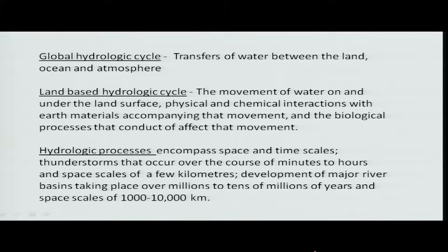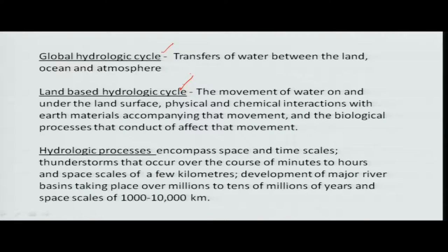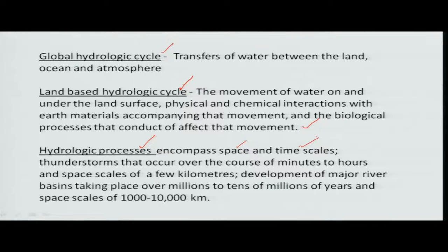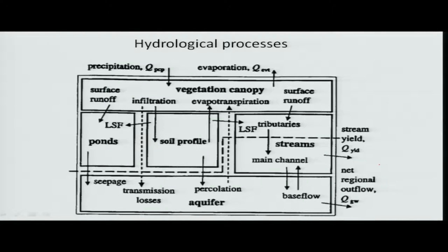If you look at the different problems in this, it is considered as a global hydrological cycle — water is transferred between land, ocean, and the atmosphere. The second aspect is the land-based hydrological cycle, which is the water movement from one place to another with physical, chemical, and biological interactions with earth material. The third process involves hydrological processes that vary across space and time scales over larger basin areas where water availability is estimated and used for planning purposes.